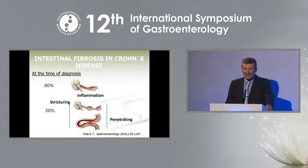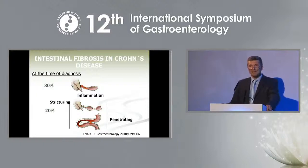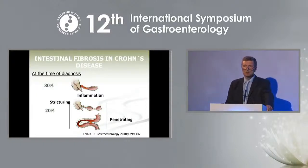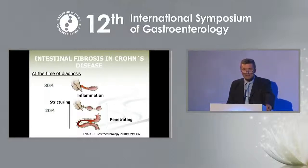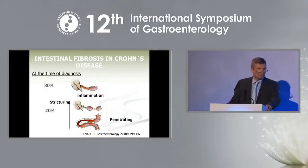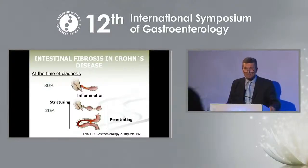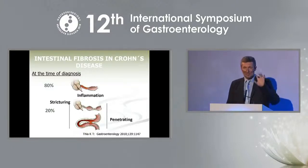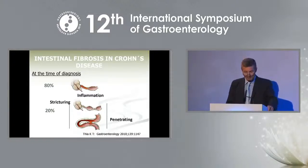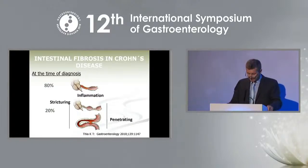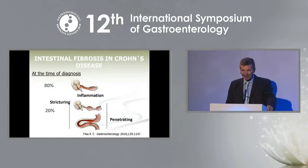This is a picture from a paper published a couple of years ago from a cohort of American patients from the Minnesota region, including more than 300 Crohn's disease patients diagnosed from 1970 to 2004. It was recognized that at the time of diagnosis, most of them — 80% — had an inflammatory phenotype without stricturing or penetrating disease. Only 20% of patients expressed some penetrating or stricturing phenotype within one year of diagnosis.